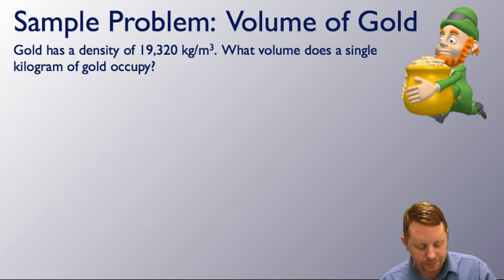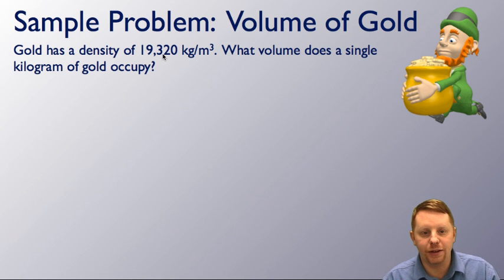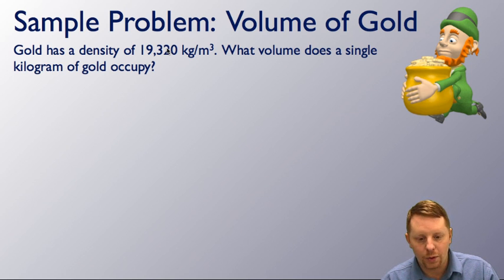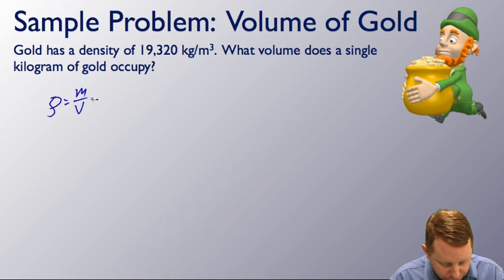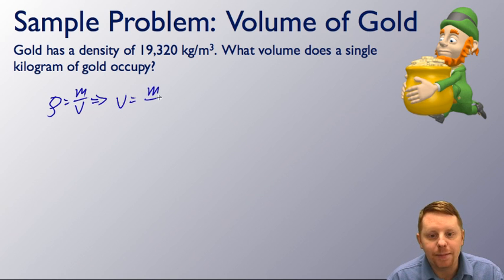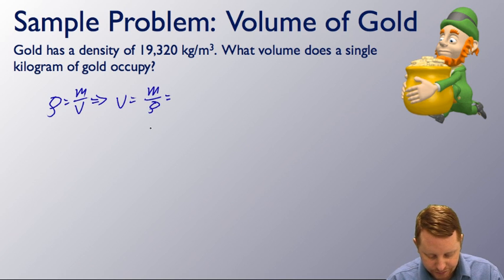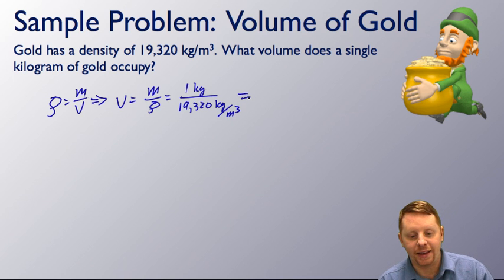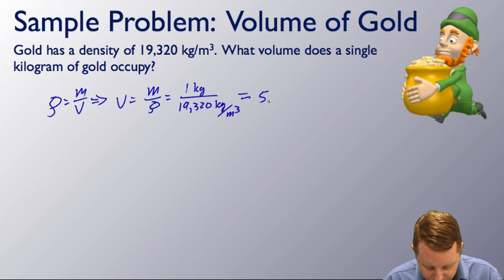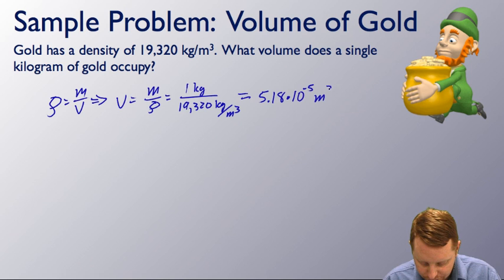How about the volume of gold? If gold has a density of 19,320 kilograms per meter cubed, what volume does a single kilogram of gold occupy? Using the same equation, volume equals mass divided by density: one kilogram divided by 19,320 kilograms per meter cubed gives approximately 5.18 times 10 to the minus 5 cubic meters.